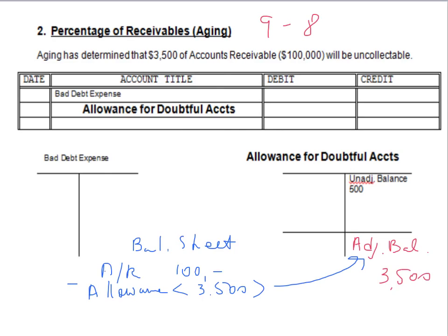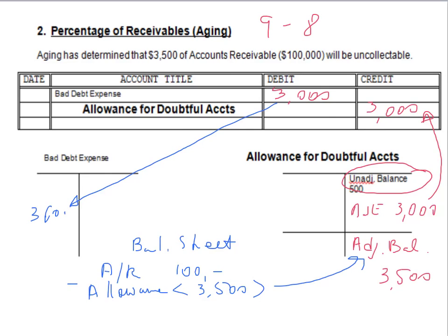The trick is this account is very busy during the year — it was used to write off accounts and then reinstate them. Bear in mind that it's not a temporary account; it's a permanent account, so you will have an unadjusted balance to begin with. In this case, it's a $500 credit balance. How shall I go from $500 on the credit side to $3,500 on the credit side? It looks like I need an adjusting journal entry for $3,000 that will give me exactly a $3,500 balance. So going back into the journal, I will need to credit the allowance for $3,000, and by default bad debt expense will be $3,000 as well, debited on this side.